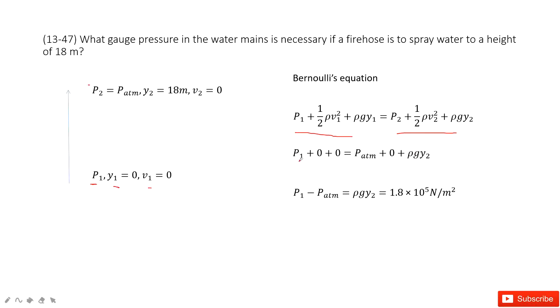And then we can find the pressure p1 minus the p atm becomes a gauge pressure equal to rho g y2. And then input is known quantities. We can find an answer there. Thank you.